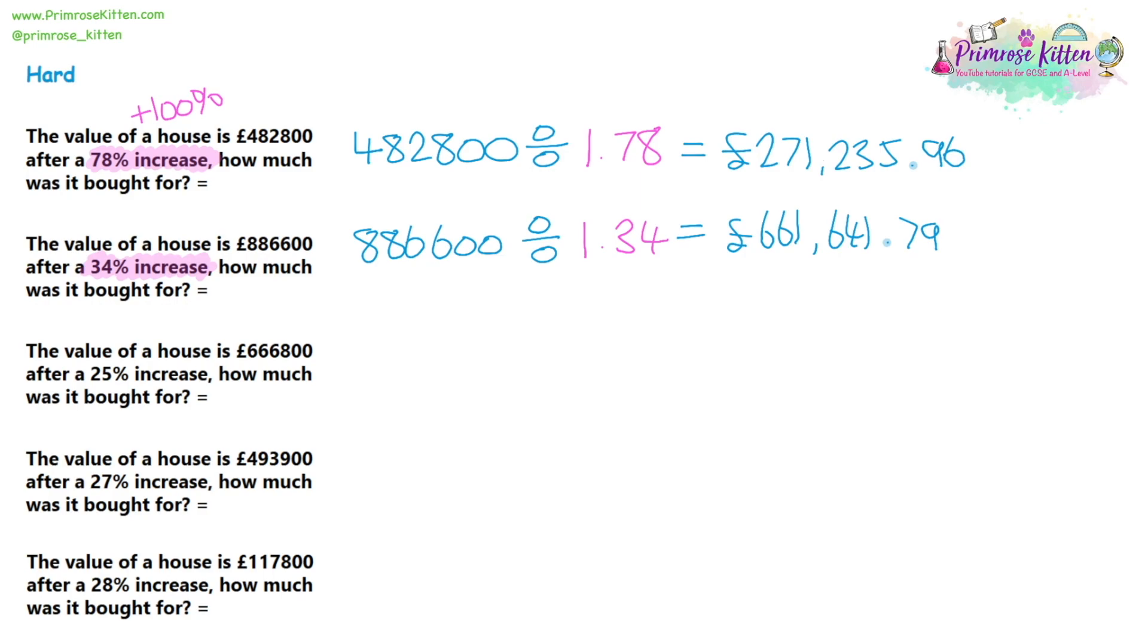So question three, let's write down the number, 666,800. We are dividing, and it's a 25% increase. So it's 1.25. And we're relying on the calculator to do this for us. So 666,800 divided by 1.25. It's going to give us 533,440. And we have no decimal places, so there's no pence. So that's going to give us £533,440.